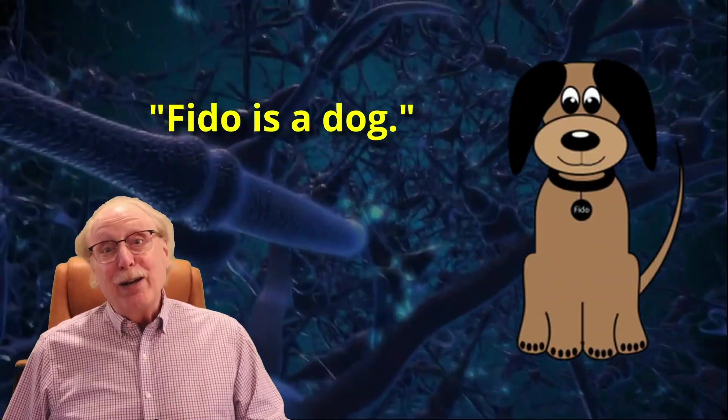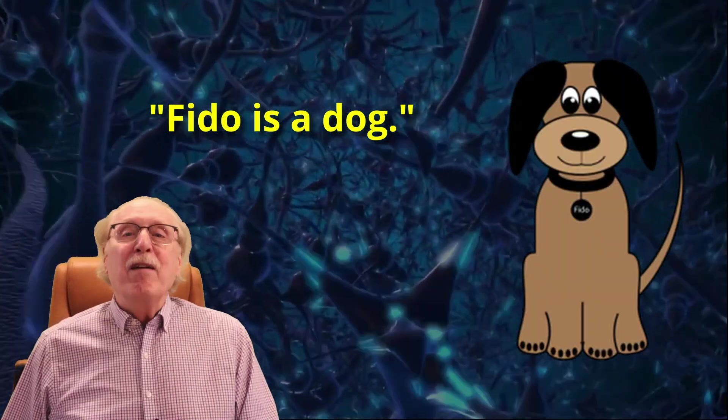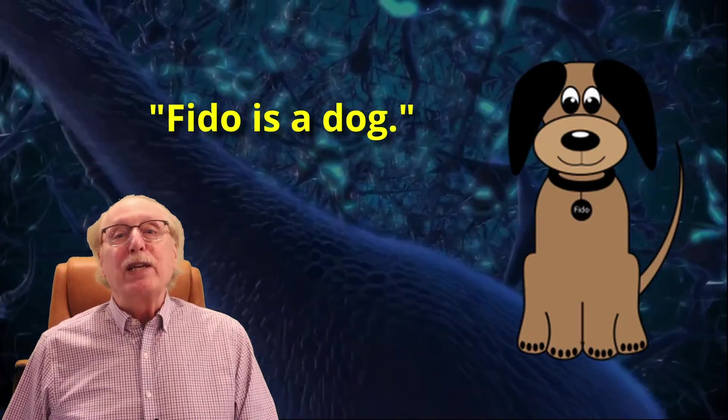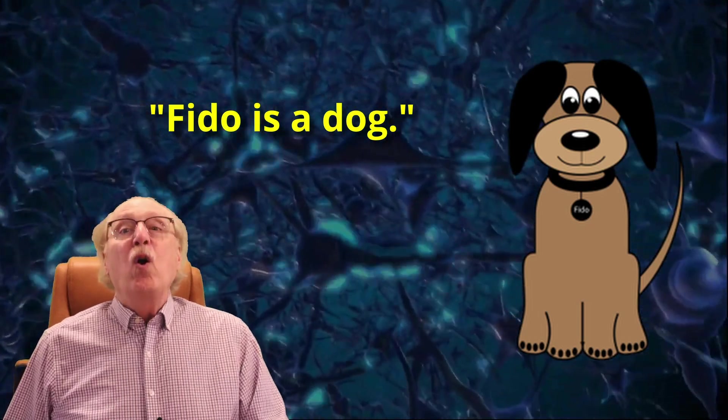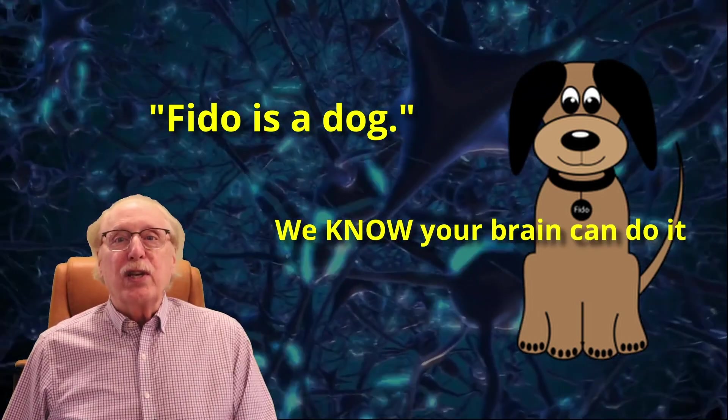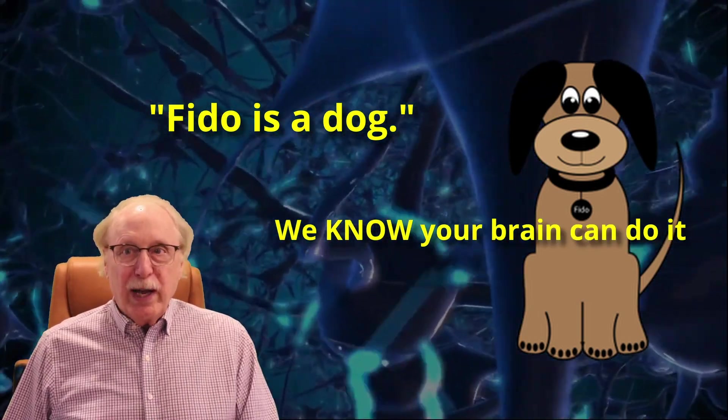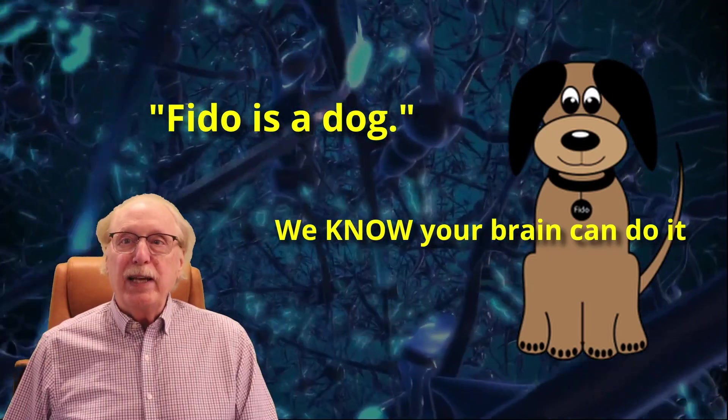Let's start out with my favorite simple example of a bit of information: Fido is a dog. Fido is a dog is a particularly useful example because it checks all the right boxes. We know your brain can store this kind of fact. People learn and recall such relationships quickly and effortlessly.